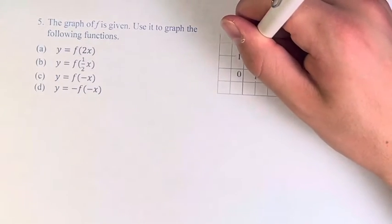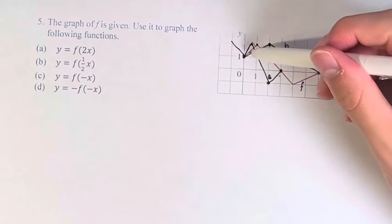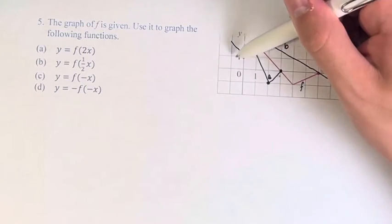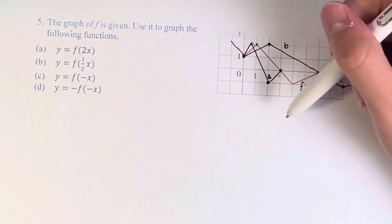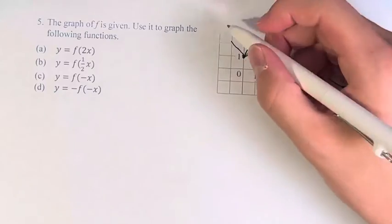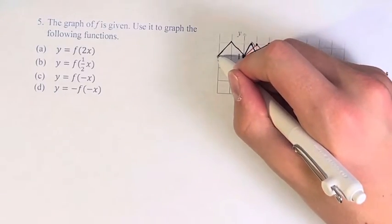So we just have to do everything we did on this side. So we go to the right 1 and up 1, to the left 1 and up 1. Then to the right 3 and down 3. So to the left 3 and down 3.